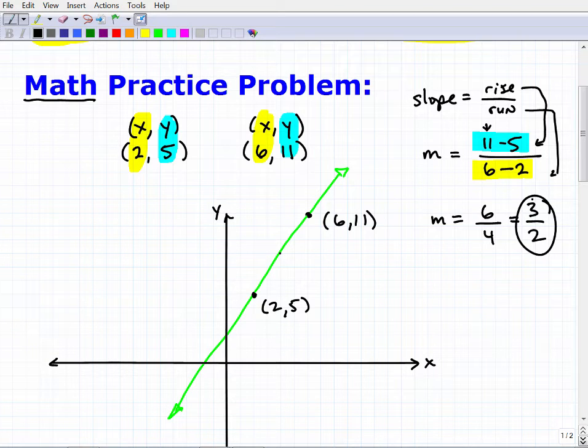But what does this mean? So we have 3 over 2. Well, what this means is this. For every 3, this line rises. Okay, it runs out 2.